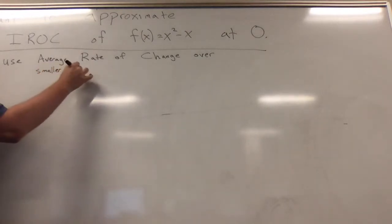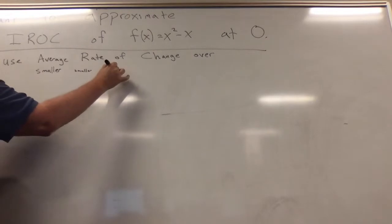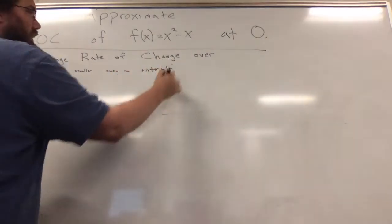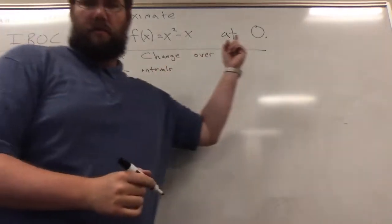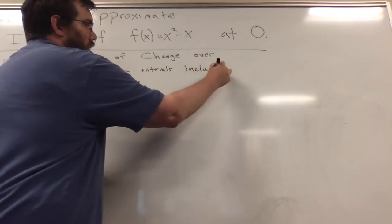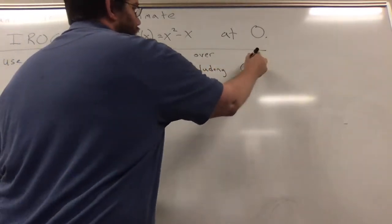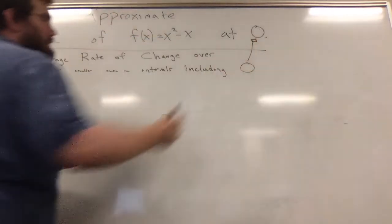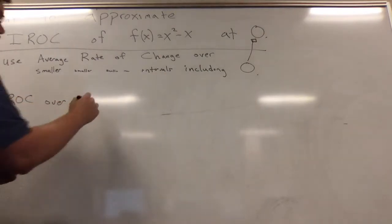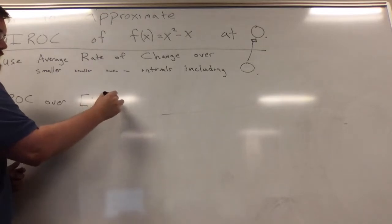We use smaller and smaller intervals that include the point you're interested in, and this is zero. So the first thing we might do is calculate the average rate of change over the interval [0, 0.5].